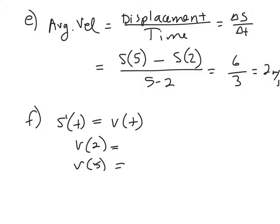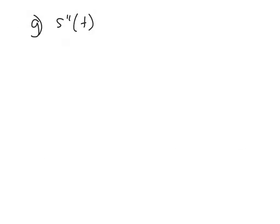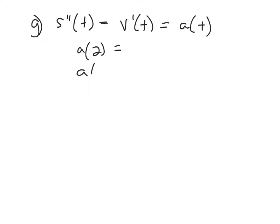Part g asks for acceleration at a particular point. When asked at a specific point, we want instantaneous acceleration, which is the second derivative of position or the first derivative of velocity. Take the derivative of the velocity function you already found to get the acceleration function.